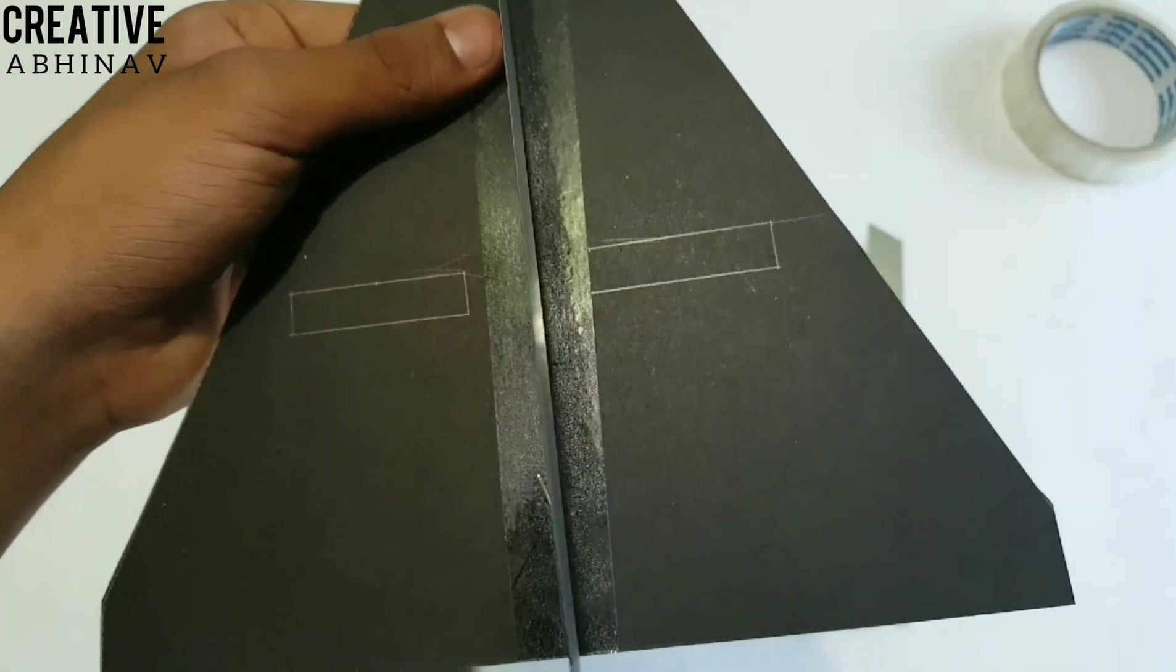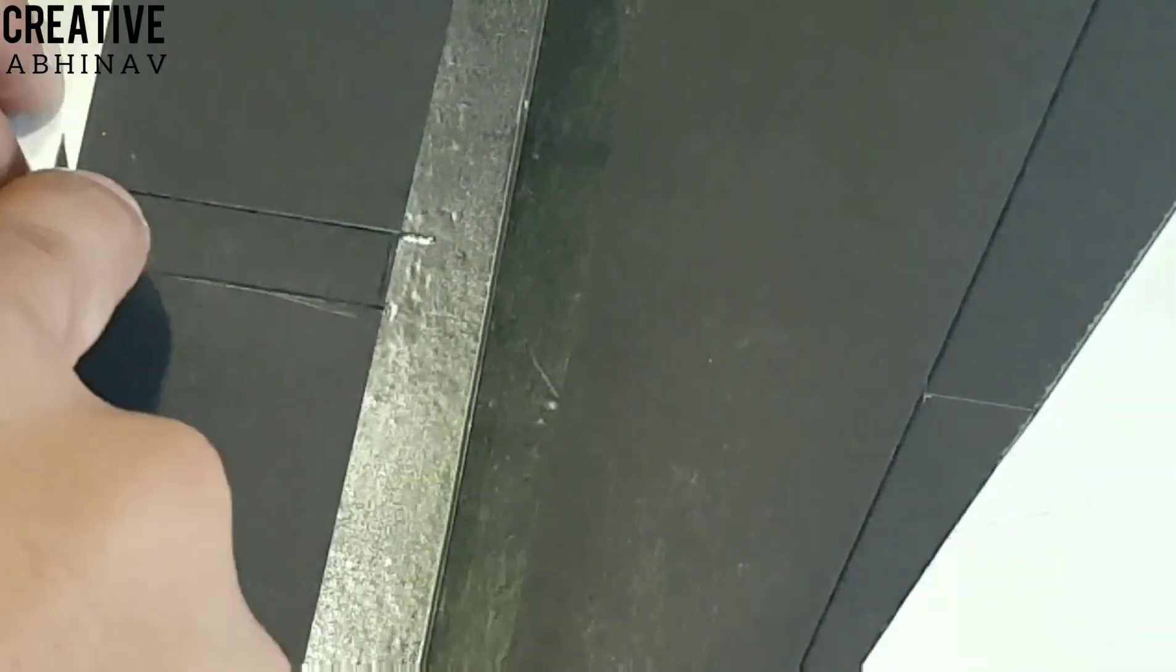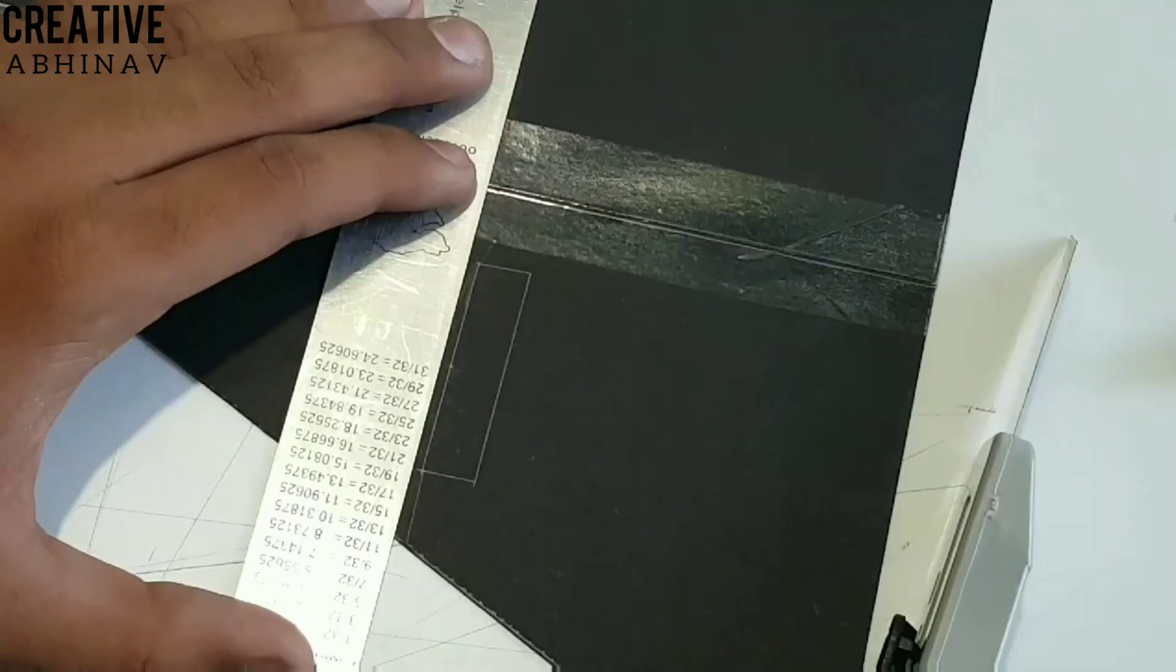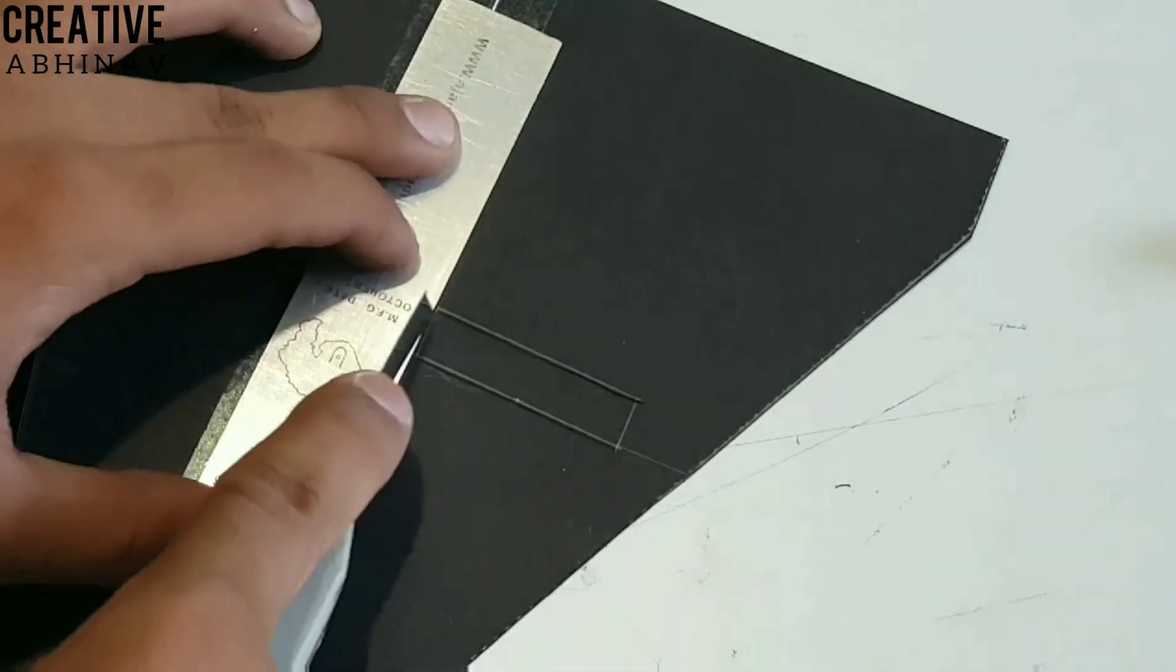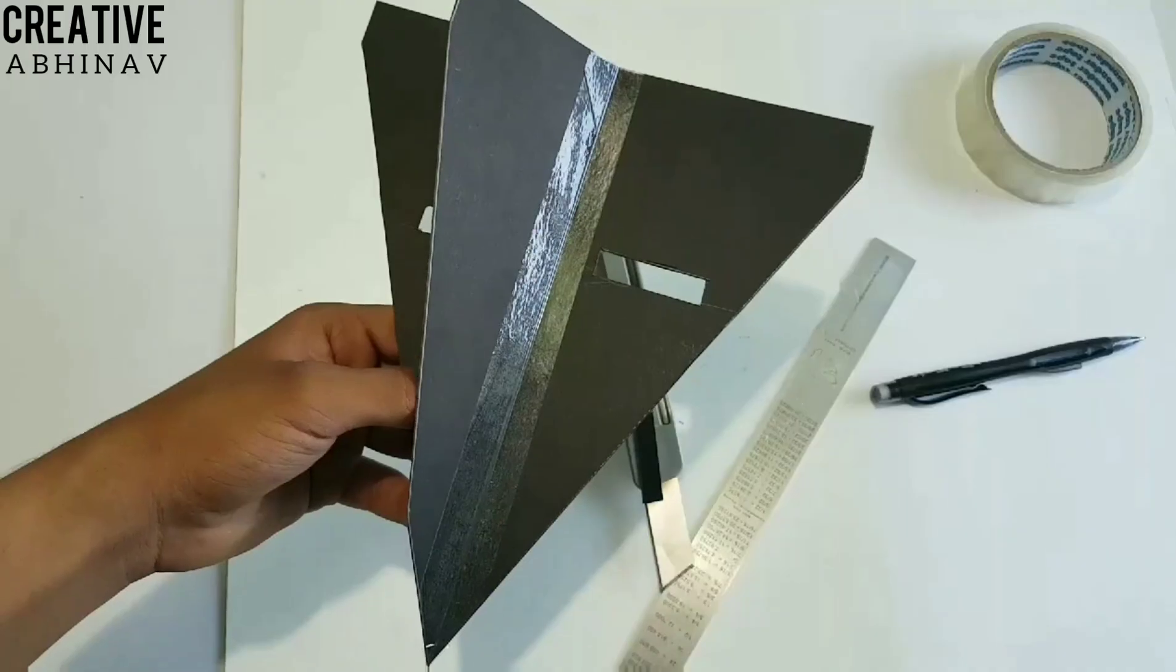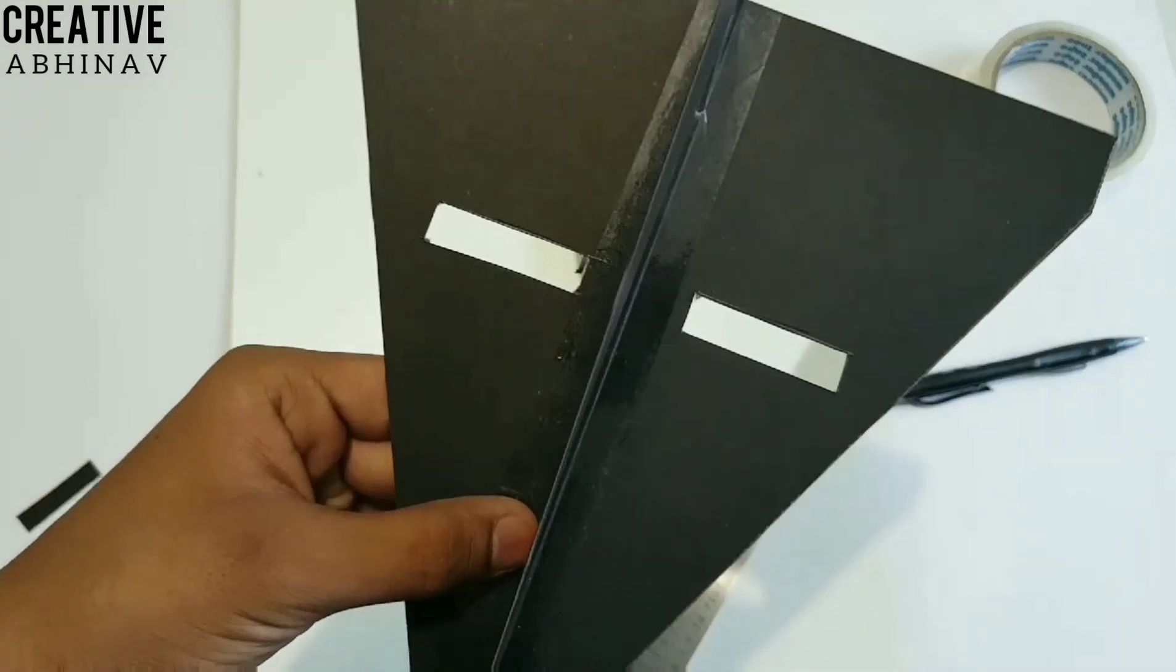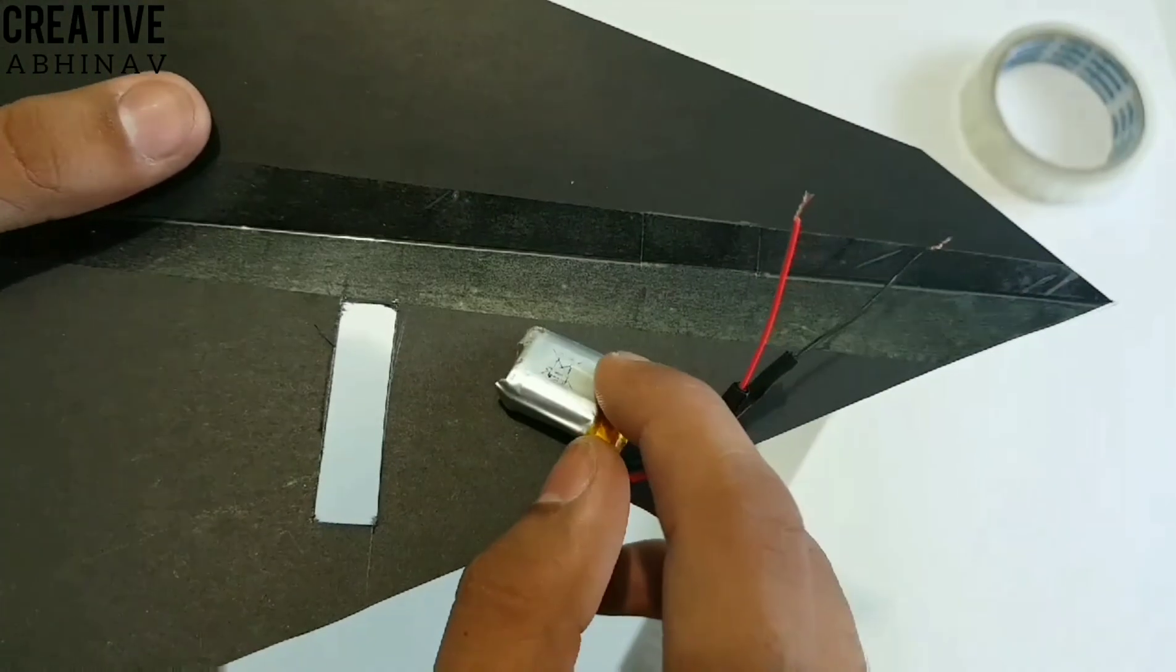Now we have to cut out two rectangles from our airplane for the propellers. Then we have to cut out another rectangle from the airplane nose for the lipo battery.